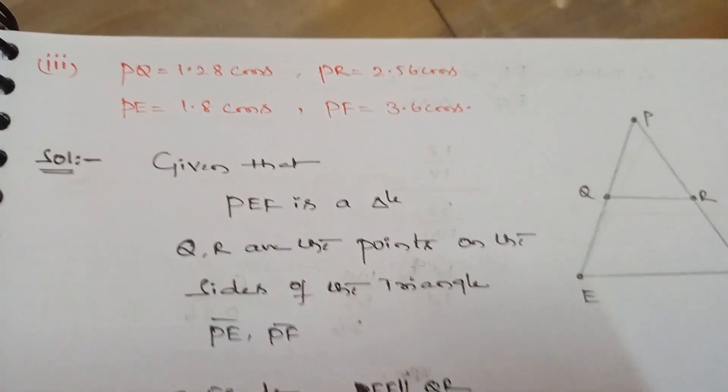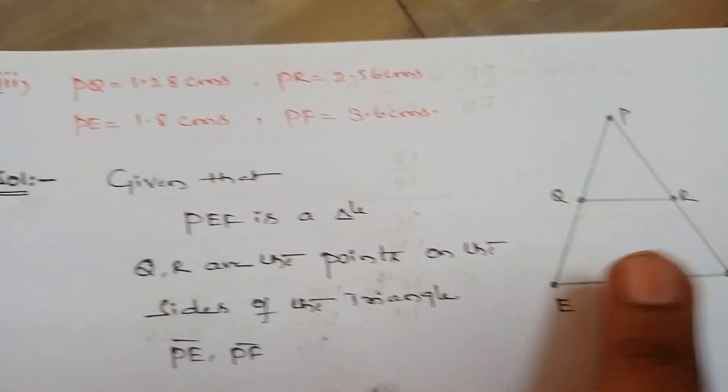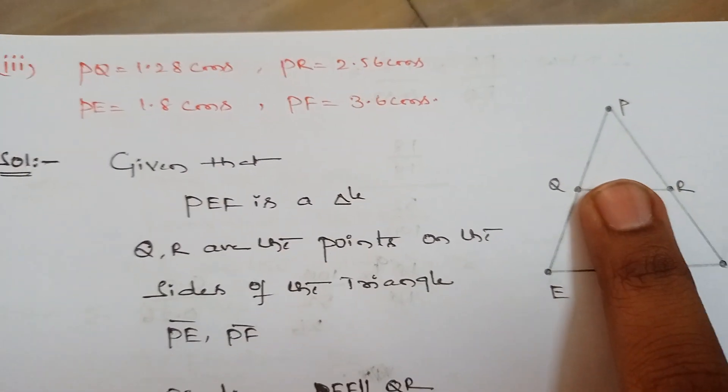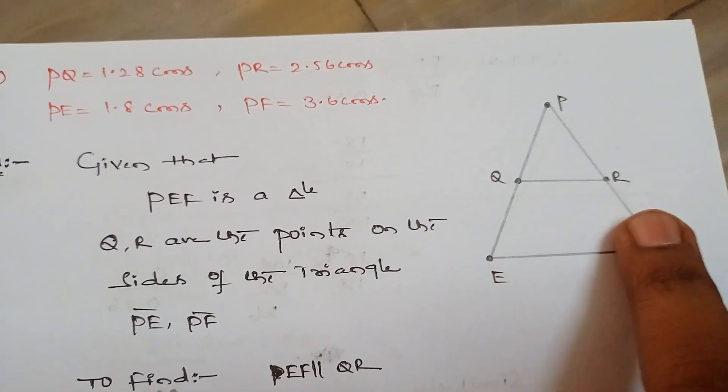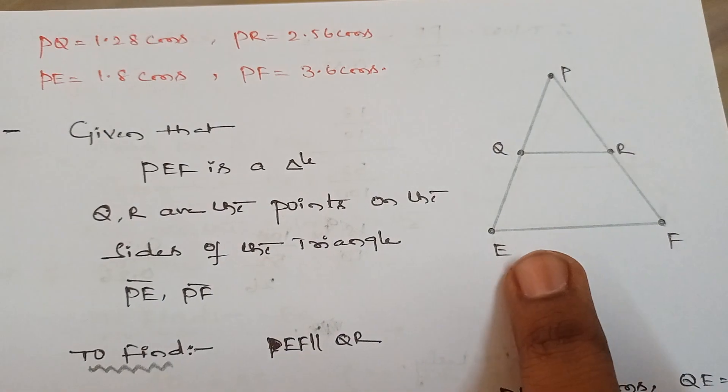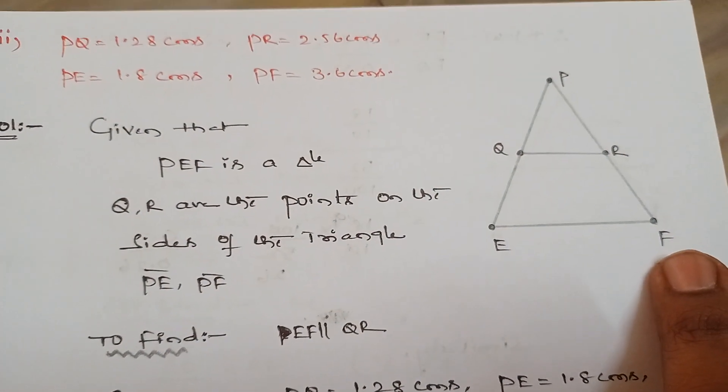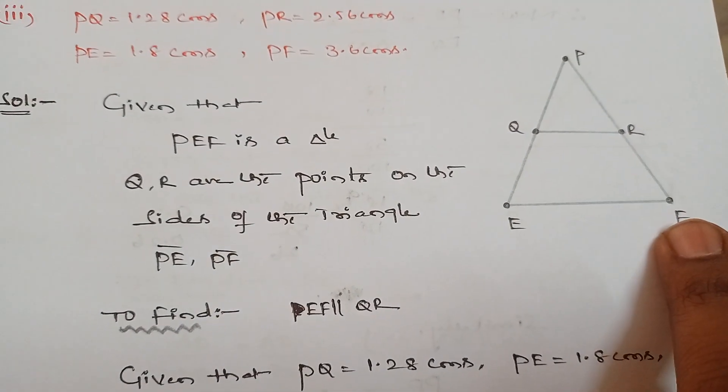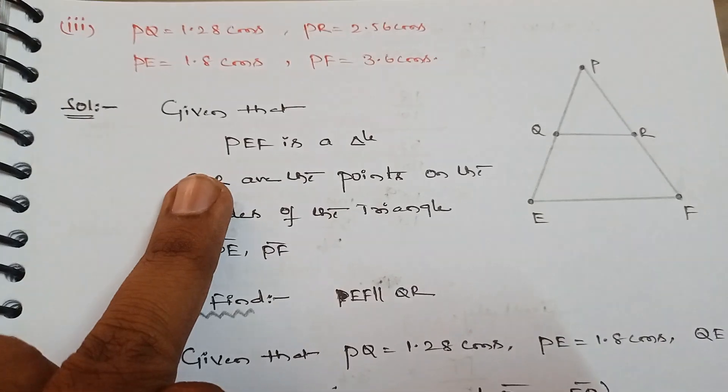PF is given as 3.6 centimeters. So draw a rough triangle by mentioning all the dimensions given. It PQ is given as 1.28, PR is given as 2.56, and PE is given as 1.8. We don't know QE, and PF is given as 3.6. We don't know RF value, guys. Okay, take down the given information.